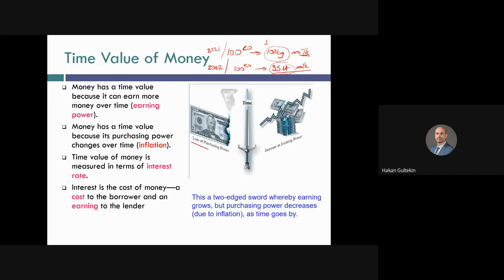These are the two reasons: loss in purchasing power, or increase in earning power. Because of these two reasons, we say that money has a time value. The time value of money is measured in terms of interest rate. When I say 5% interest rate, this is the time value of money.